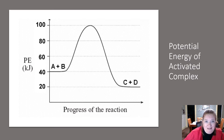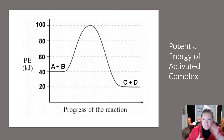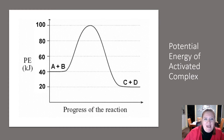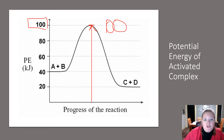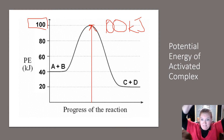What is the activated complex? The activated complex is the tippy top. The reactants interact, absorb a certain amount of energy called the activation energy, and then form this activated complex at the very tip top. To find its potential energy, you go from the bottom all the way up to the top and read the number — in this case, 100 kilojoules.